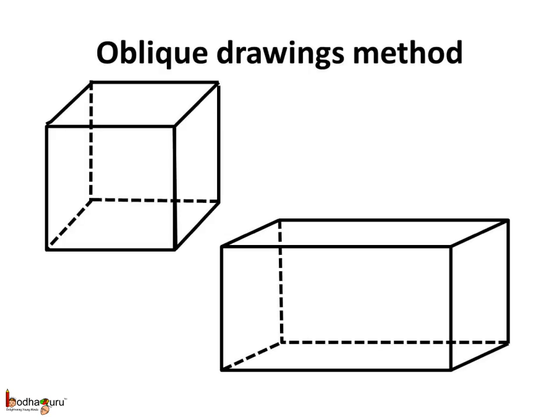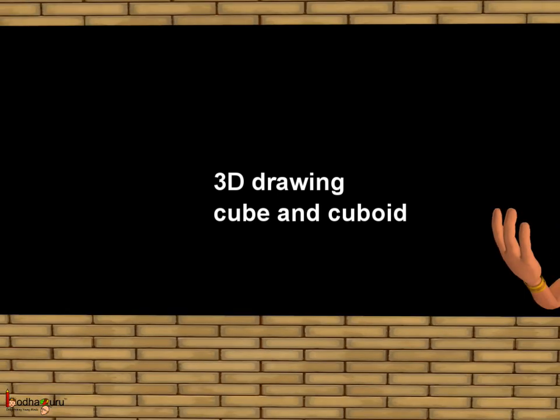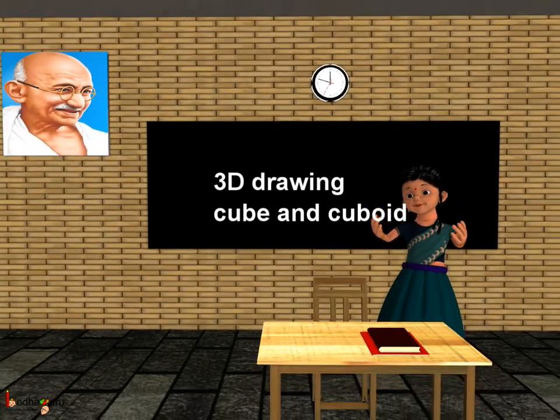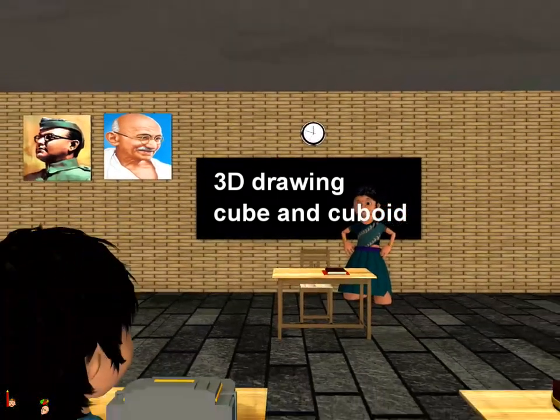So, now we know how to draw the 3D model of a cube and a cuboid on the paper. And, this method is called the Oblique Drawings Method to represent the 3D shapes on the paper. That was all for today. Bye-bye, children.